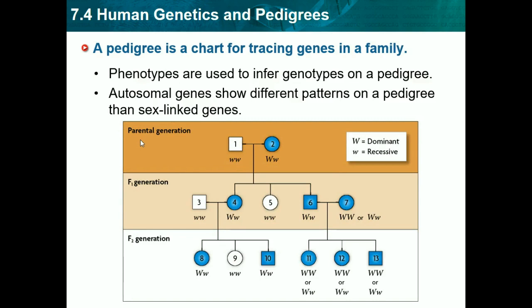To read a pedigree chart: circles represent females and squares represent males. The topmost row is the parent generation, and as we go down, scientists label them F1, F2, F3 — each successive generation. The top row is the parents, then the children, then the grandchildren. Shaded circles or squares indicate individuals with the disorder being studied — for example, if studying diabetes, shaded individuals would have diabetes.